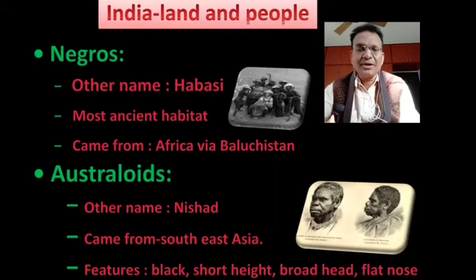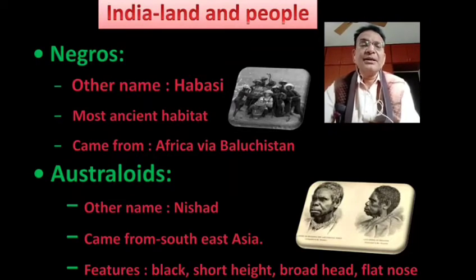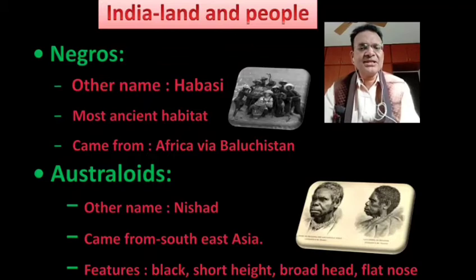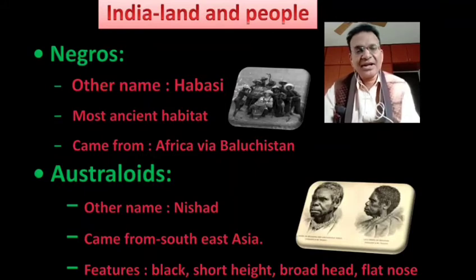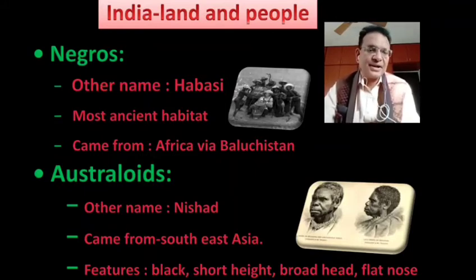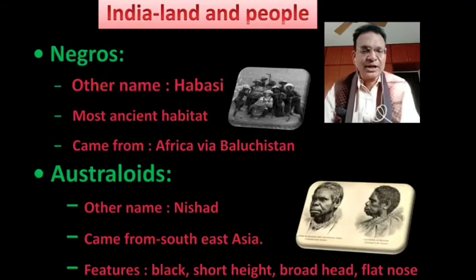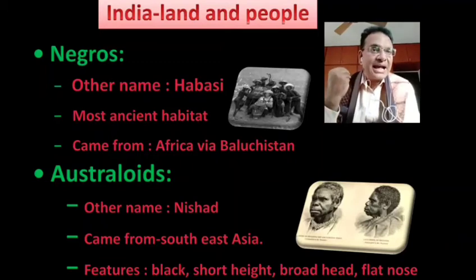First of all we will go for the Negroti or Negros, in other words we can consider them as Hapsi. Some historians believe that Negroti or Negros are the most ancient inhabitants of India, because they came from Africa via Balochistan to India. They were black and having a height of 4 to 5 feet and curly hair. Remember these characteristics: they came from Africa via Balochistan, black in color.